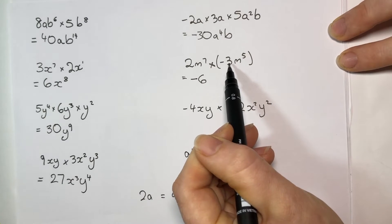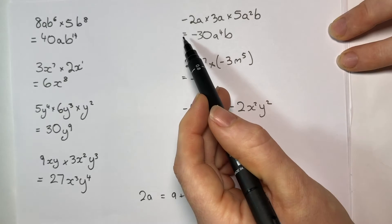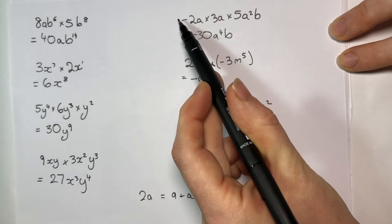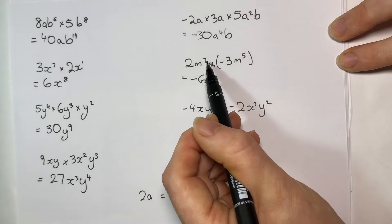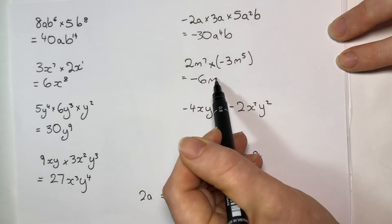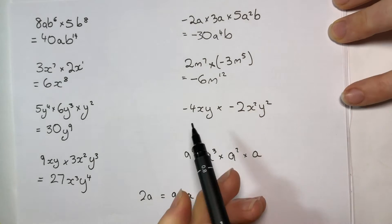That negative just belongs to that 3, the negative never belongs to the thing in front of it. So if there was a number here, that minus still belongs to the 2 and not whatever was sitting there. Back over here, m to the 7, m to the 5, that's m to the 12 altogether, timesing up.